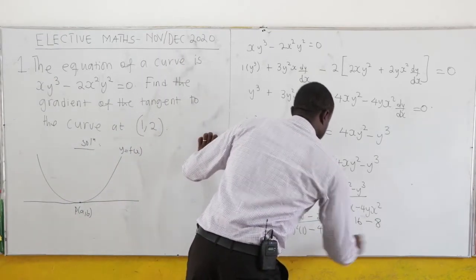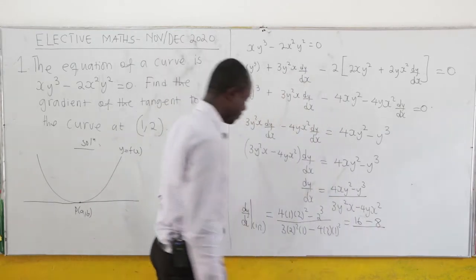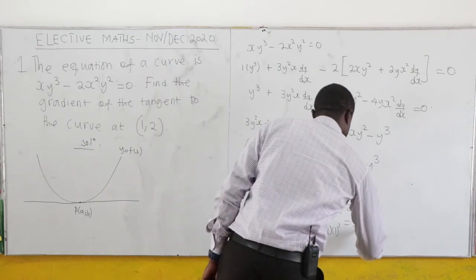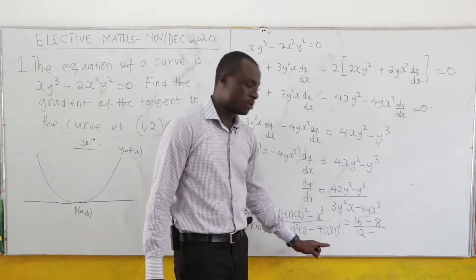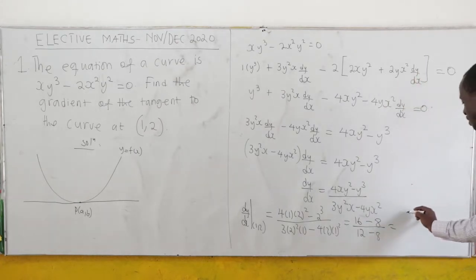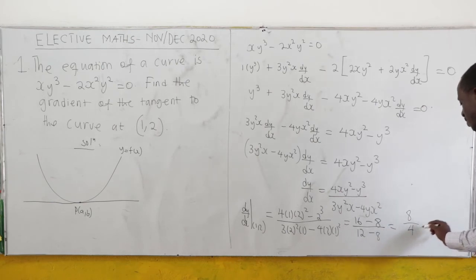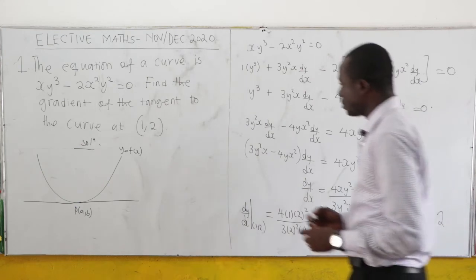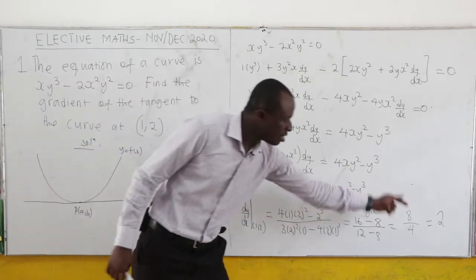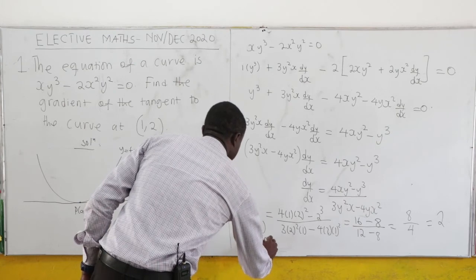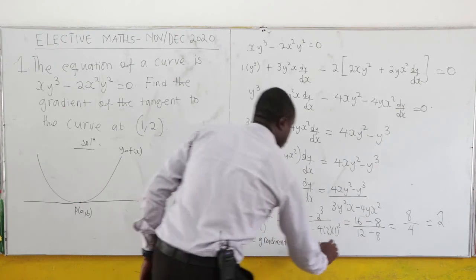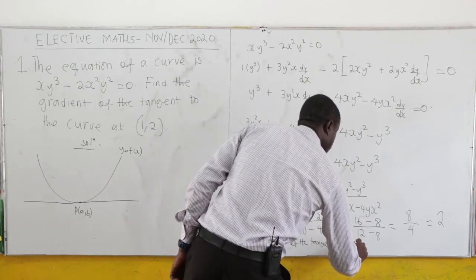Now we have 4 times 4, so that's 16, minus 8 — since 2 to the power 3 is 8 — all over: 2 squared is 4 times 3 gives 12, minus 4 times 2 is 8. So 16 minus 8 is 8, and 12 minus 8 is 4. This gives us 8 over 4, which equals 2. Therefore, the gradient of the tangent to the curve is 2.